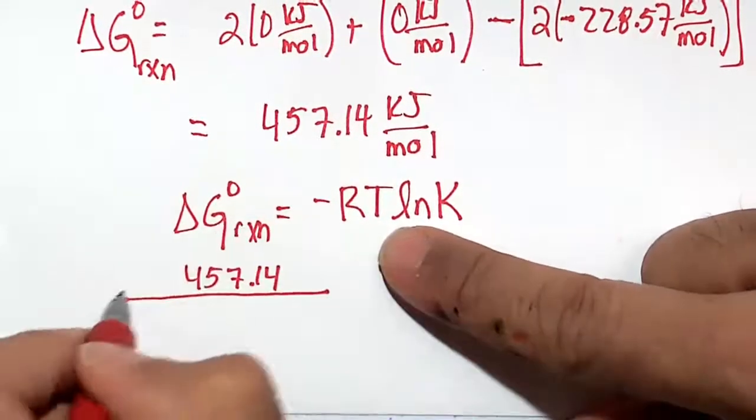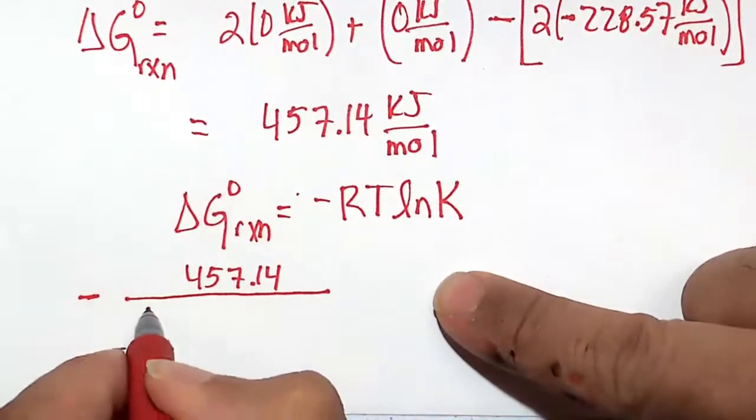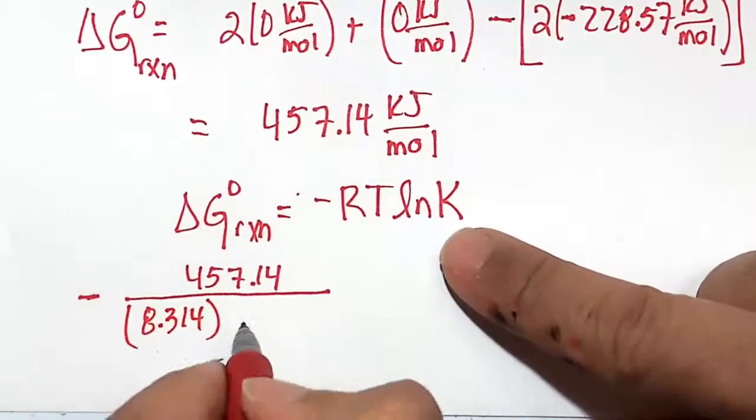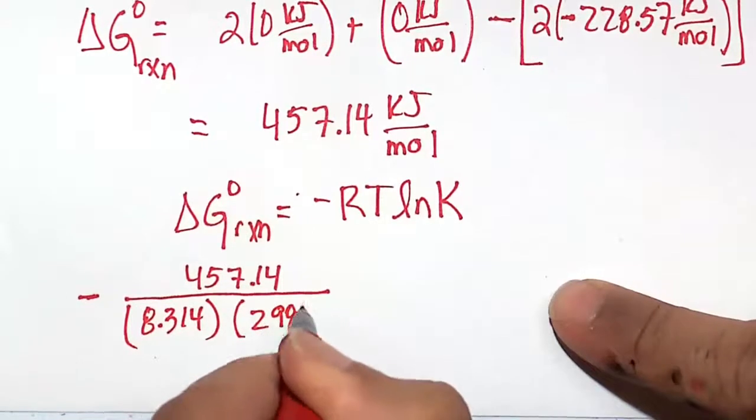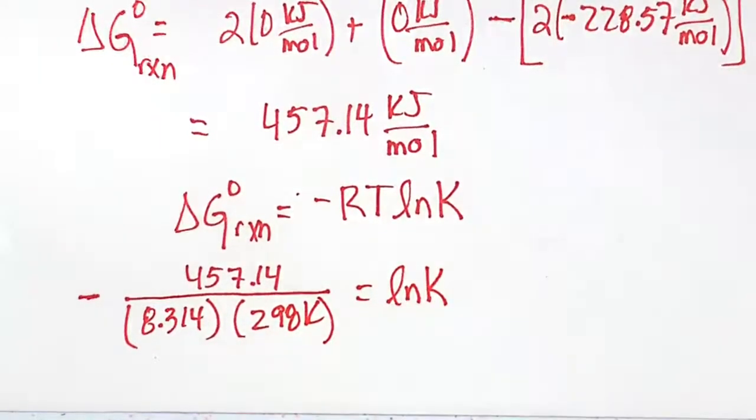R is, let me put the minus sign here, so we're going to divide that by RT. So 8.314, I'm not going to put units because K has no units. And at standard state, we're at 25 degrees C or 298 Kelvin.